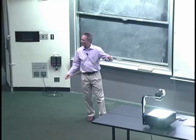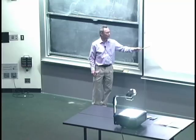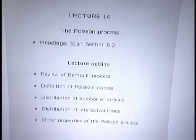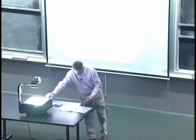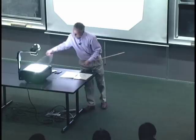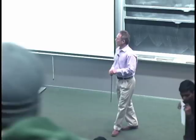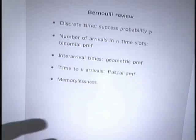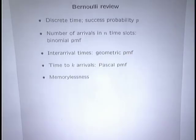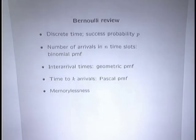For the Poisson process we'll do the same things as for the Bernoulli process: talk about the number of arrivals during a given time period and the time between consecutive arrivals. A note about language: instead of heads/tails or successes/failures, we'll use the language of arrivals. If in a given slot you have a success, something arrived; if a failure, nothing arrived. This language is more natural, especially in continuous time.